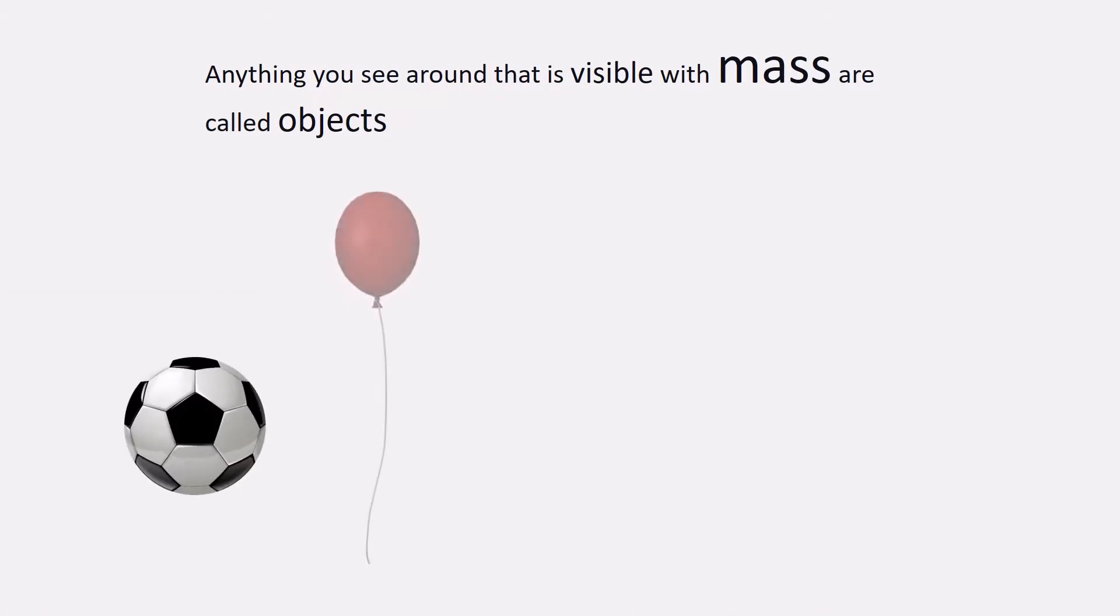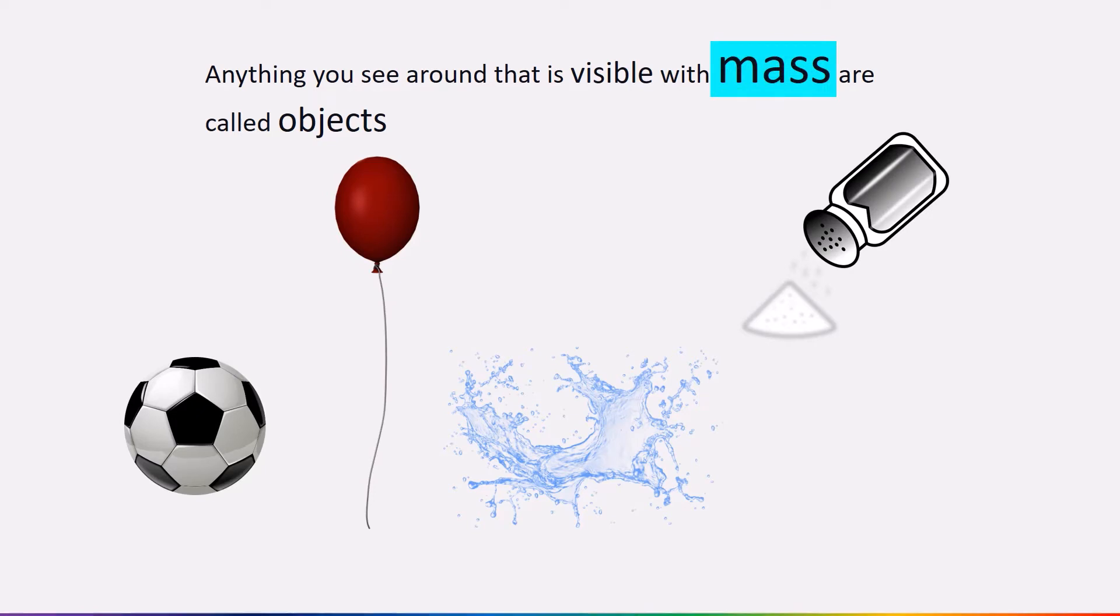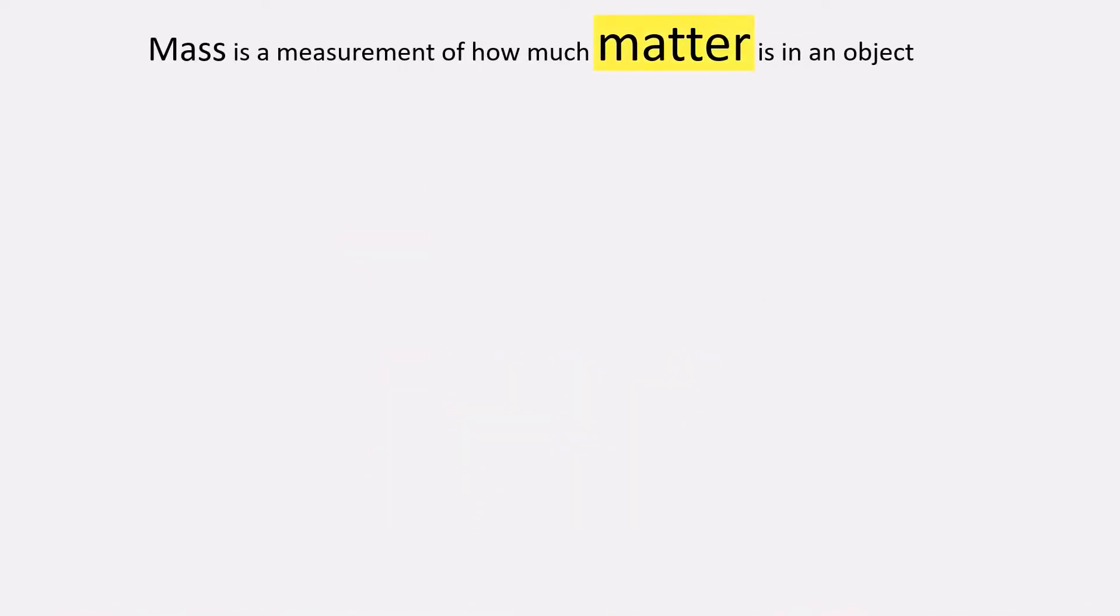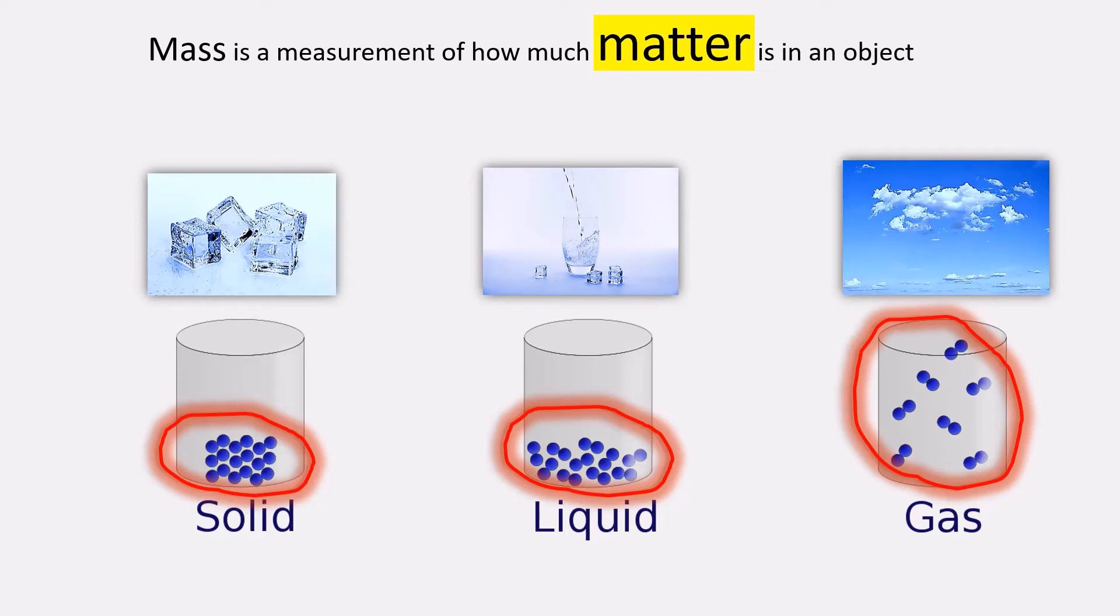Anything you see around that is visible with mass are called objects. Mass is a measurement of how much matter is in an object, like the amount of matter in a certain quantity of water no matter what is the state of it. It may be solid, liquid or gas.